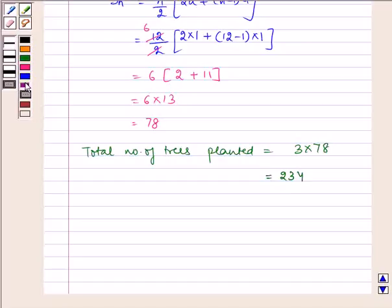Hence, total number of trees is equal to 234 which is our required answer. I hope you understood this question. That's all for the session. Bye and have a nice day.